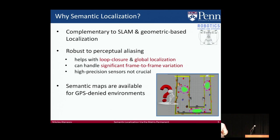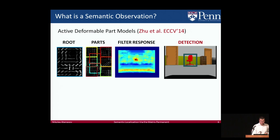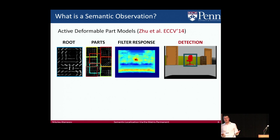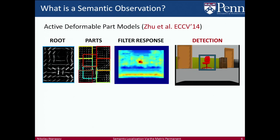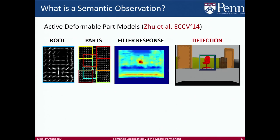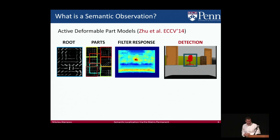What is a semantic observation? The state of the art in single object image detection is obtained by deformable part models. In these models, an object is represented as a collection of parts and a detector is learned for each part. Here is an example of a chair represented with nine parts, including its wheels and back support. Each detector runs in a sliding window fashion on the RGB image, producing a score, and the location giving the highest cumulative score is considered a detection. In this work, we used an active approach to decide which detectors to run and where. A semantic observation consists of a detected class, a detection score from the filters, and a bearing to the detected object.